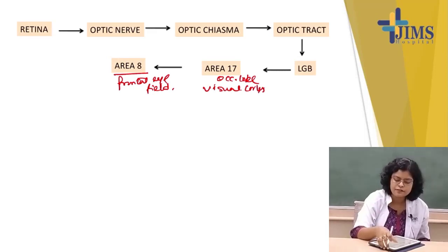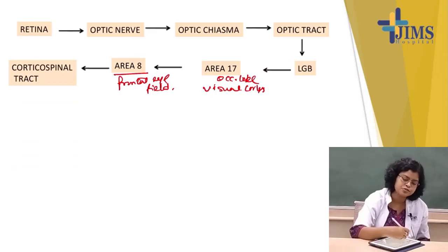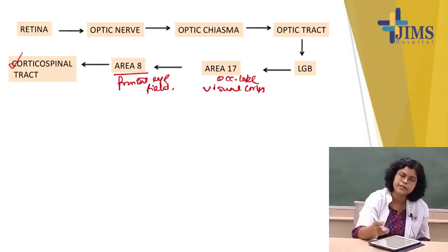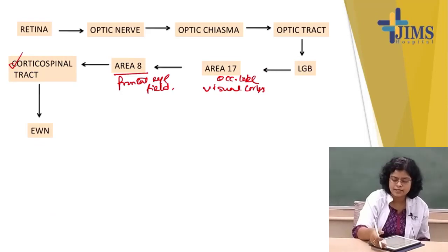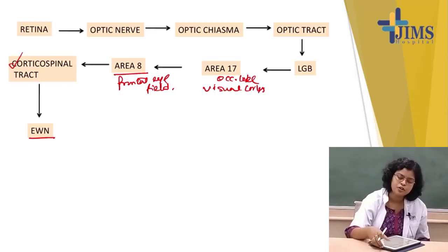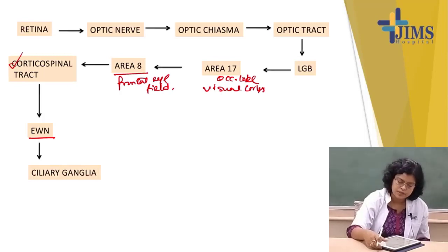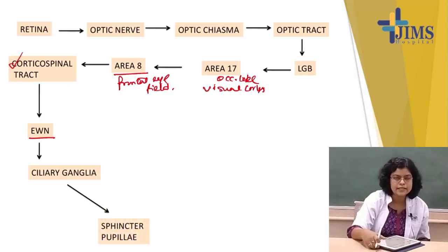From the frontal eye field, the impulse descends through the corticospinal tract. From the corticospinal tract it comes to the Edinger-Westphal nuclei. From the Edinger-Westphal nuclei, one supply goes to the ciliary ganglia, and from the ciliary ganglia it goes to the sphincter pupillae — causing constriction of the pupil, miosis.